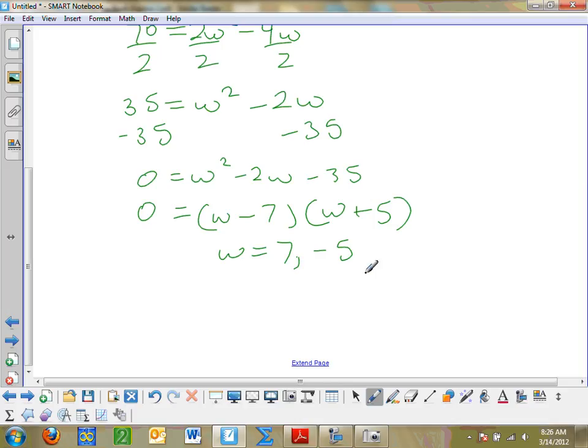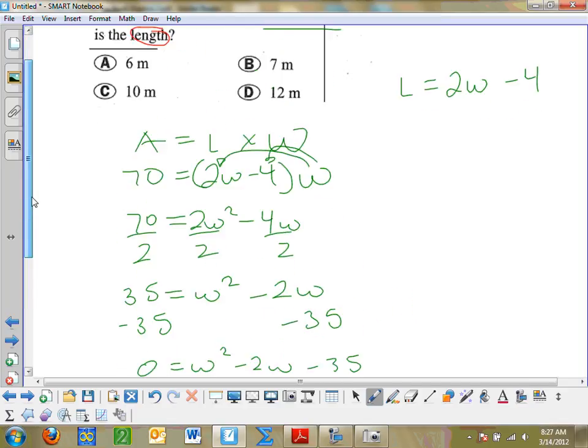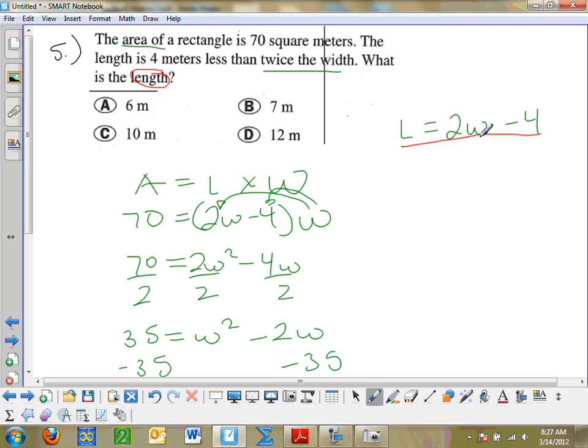Now this is supposed to be the width of a rectangle. So I got to eliminate the negative value. And that's depending on the word problem there. So I can only use this as my width. Then I re-look at the problem, and it says there that what is the length? Now I just found the width. The width was 7. I need to find the length though, and I have my nice formula for the length right here, which I'm just going to plug into. So I go ahead and plug it in there. The length is equal to 2 times the width, which you just found is 7, minus 4, and I get length is 14 minus 4, where the length is 10.